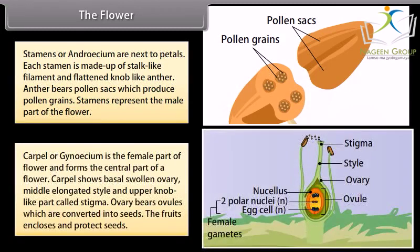Carpel or gynoecium is the female part of flower and forms the central part of a flower. Carpel shows basal swollen ovary, middle elongated style and upper knob-like part called stigma. Ovary bears ovules which are converted into seeds. The fruits enclose and protect seeds.